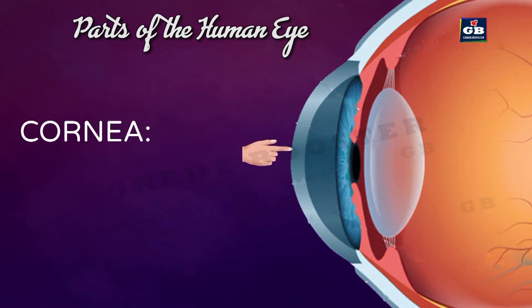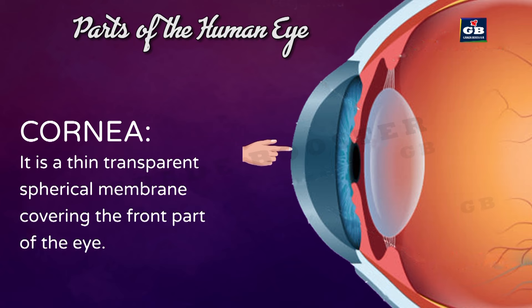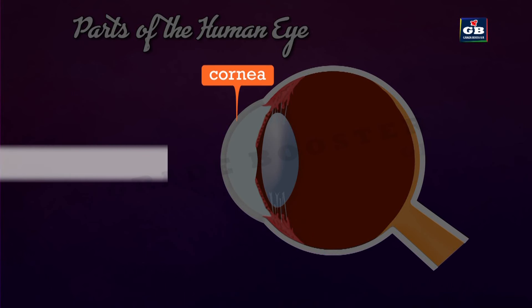Cornea: It is a thin transparent spherical membrane covering the front part of the eye. Light enters our eye through this membrane, so it is the outer protective membrane of the eye.